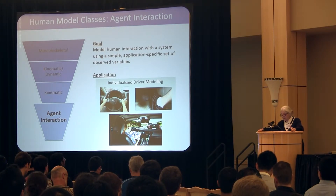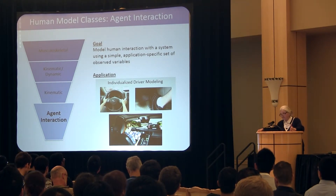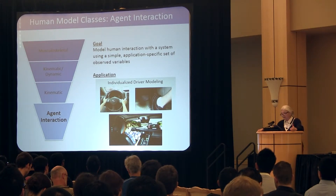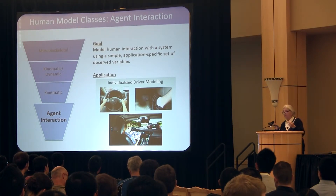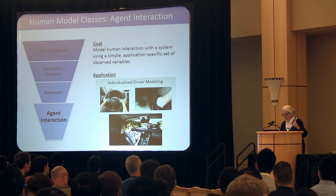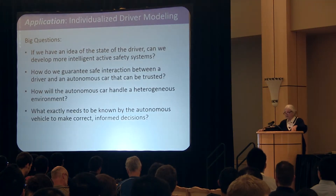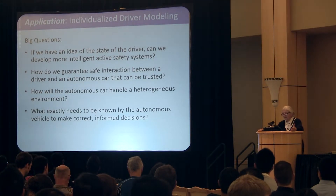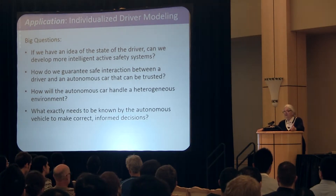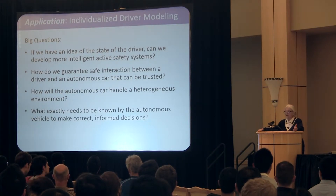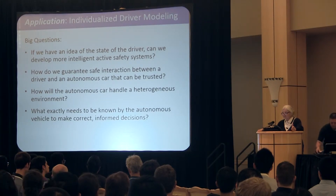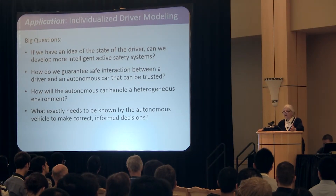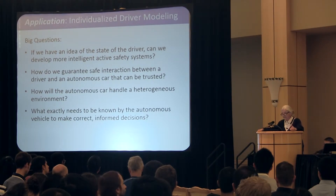Katie is investigating human interaction in a car — how much human capabilities affect the driver's safety. The big question we have is: if we have an idea of the state of the driver, can we develop more intelligent, active safety systems? How do we guarantee safety? Safety is a big deal, even for autonomous cars. The government is not going to approve autonomous cars unless we can guarantee the safety.